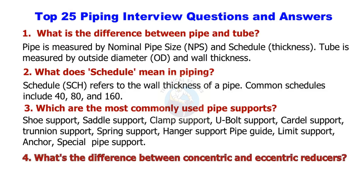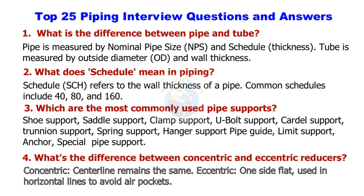What's the difference between concentric and eccentric reducers? Concentric: the centerline remains the same. Eccentric: one side is flat, used in horizontal lines to avoid air pockets.